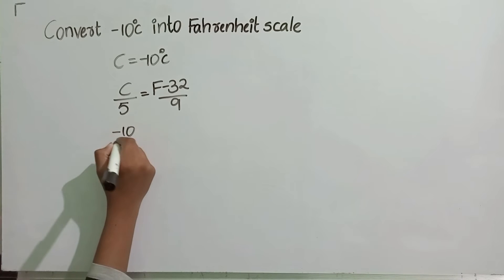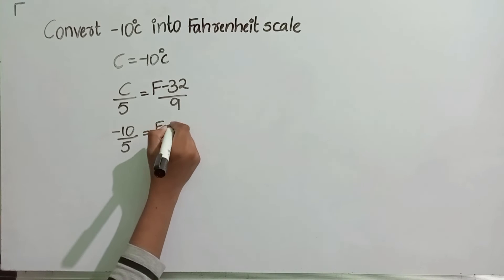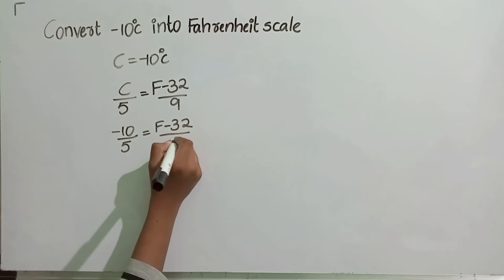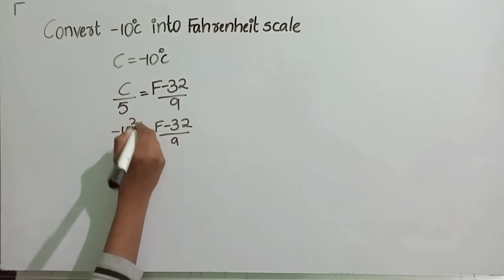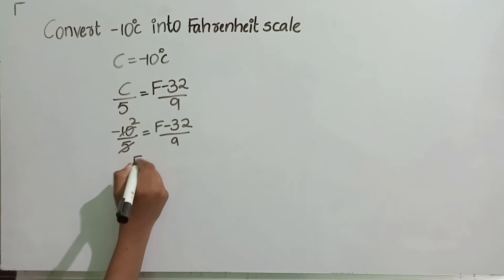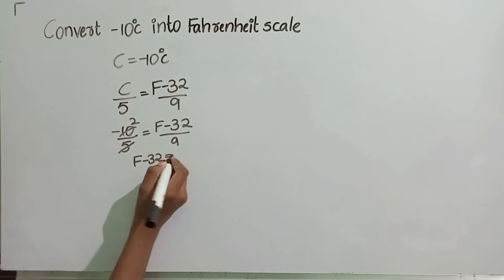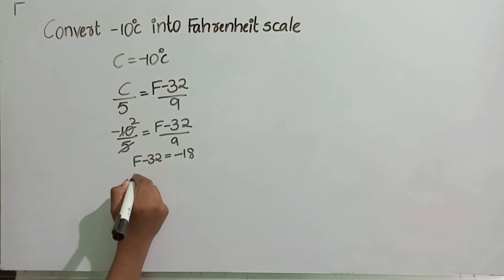So, on substituting, minus 10 by 5 is equal to F minus 32 by 9. F minus 32 is equal to 9 into minus 2, that is minus 18.